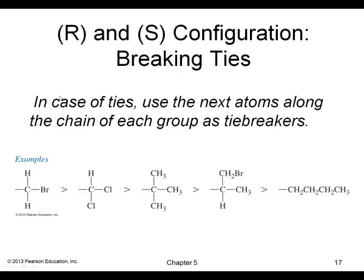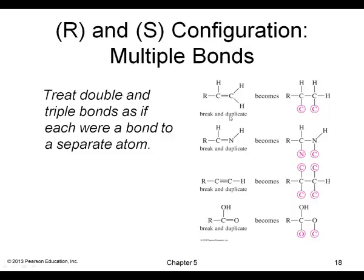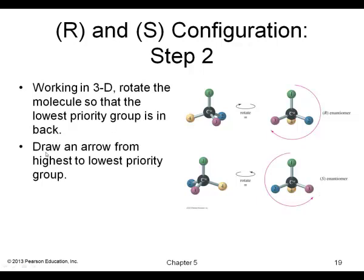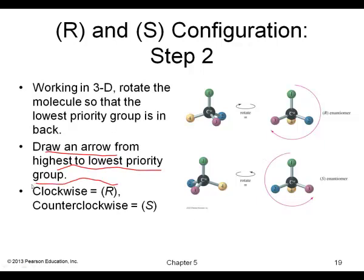Here are more examples of R/S assignments, including breaking ties. If you have a double bond to a carbon, it's counted as bonded twice to that carbon; a triple bond is counted three times. With group four in the back, R is clockwise and S is counterclockwise. We draw an arrow from the highest to the lowest priority — never forget that R is clockwise and S is counterclockwise.